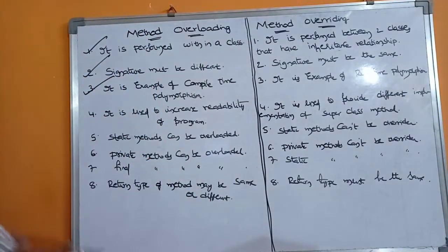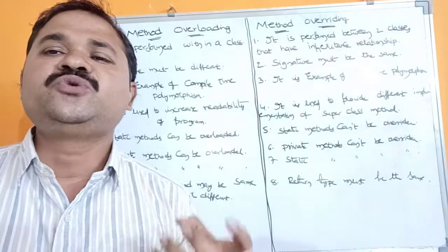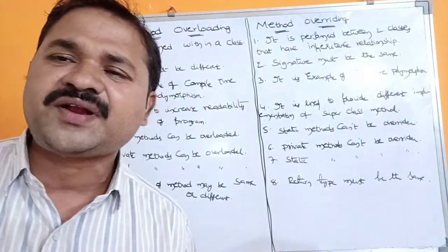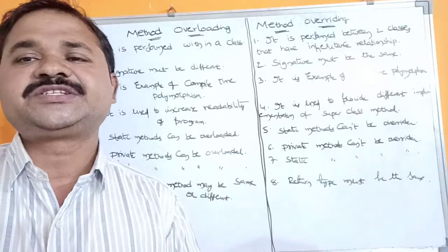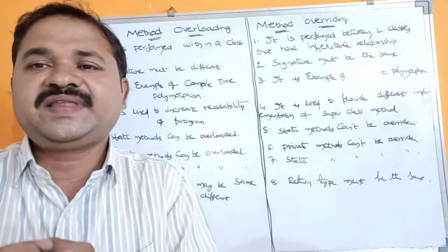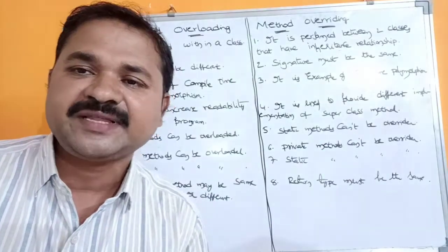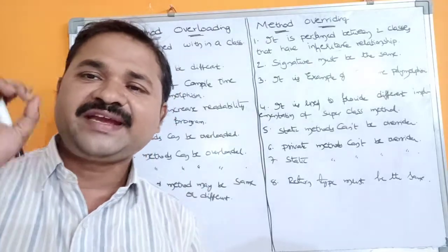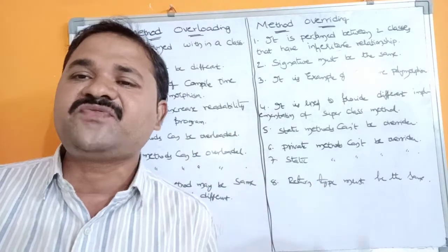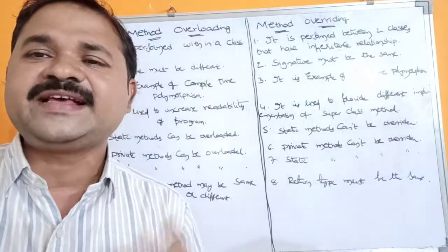The next point: method overloading is used to increase the readability of the program. We can define the same method with different signatures for different purposes. For example, with a method called 'add' we can add two integers, two floats, two doubles, one integer and one double, three floats, or three doubles — performing various types of activities using the same method name.